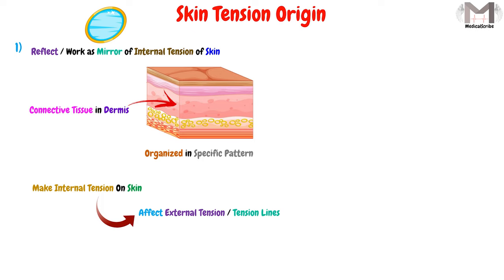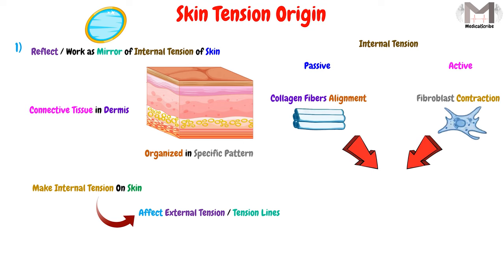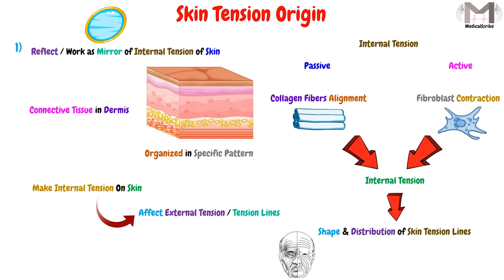If we dig deeper into the internal tension, we find that it is of two types: passive and active. The passive tension is due to the collagen fibers alignment in the connective tissue. The active tension occurs due to the contraction of the fibroblast cells that are also found in the connective tissue. The result of these two types of tension shapes the internal tension that affects the distribution of the skin tension lines.